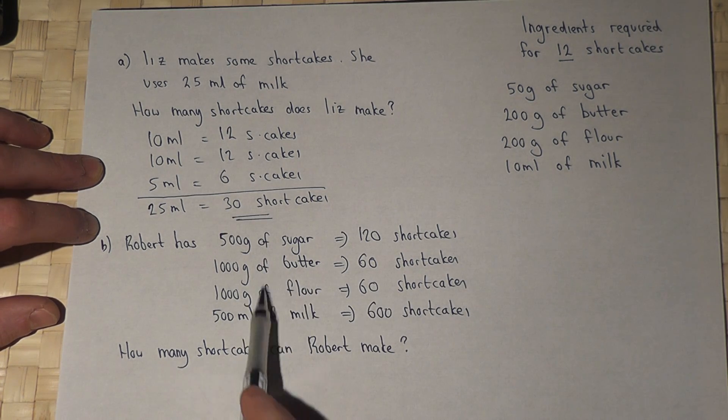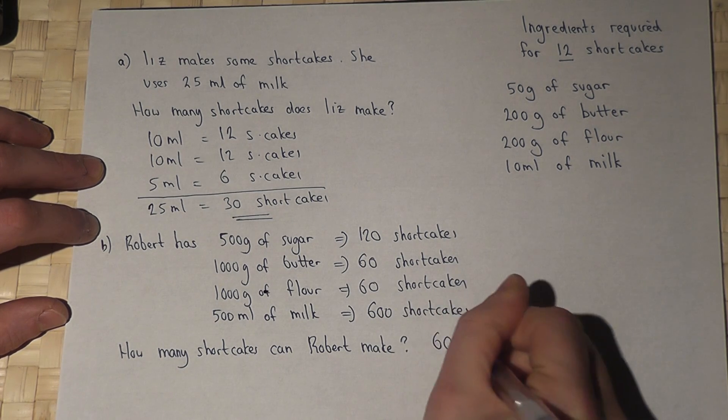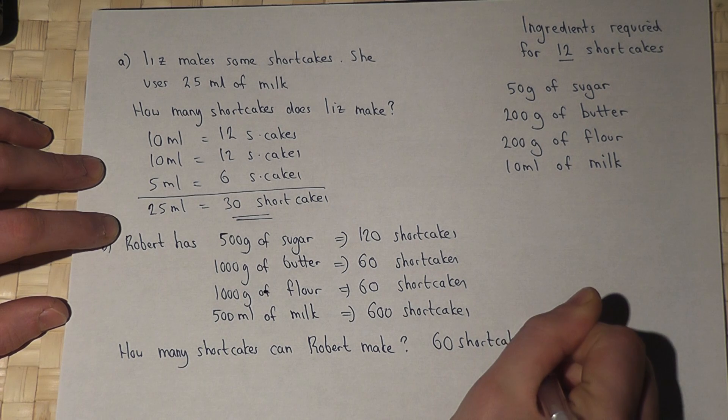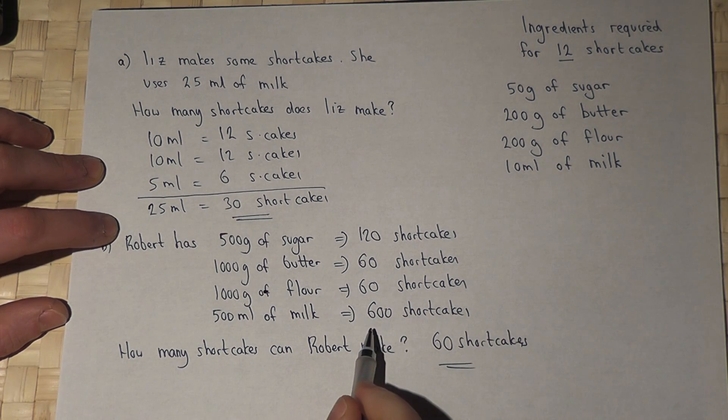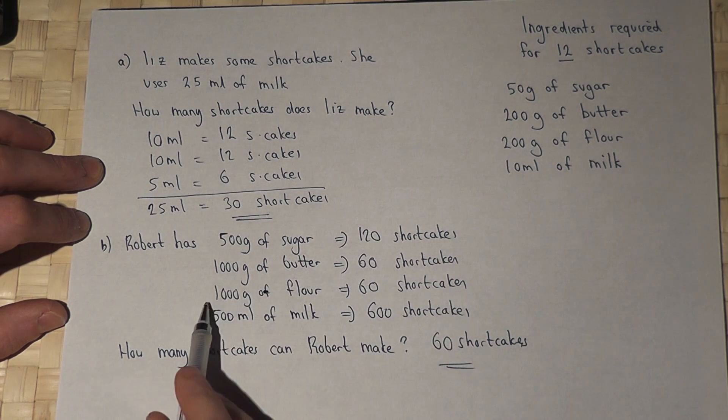But given these ingredients, he can only make 60 shortcakes at most. Having made those shortcakes, he'll have lots of milk left over and some sugar, but will use up all the butter and all the flour.